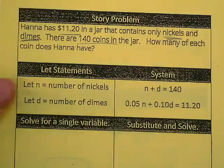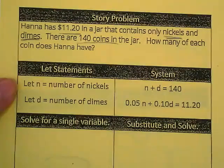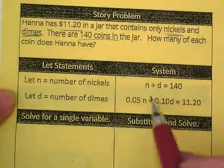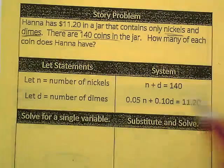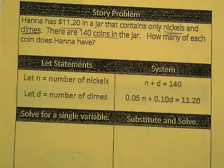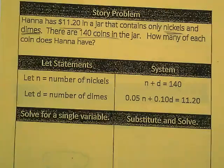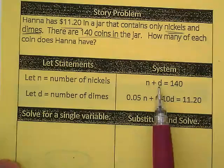How many of each coin does Hannah have? This has already been done for us today. We're going to let N equal what? And we're going to let D equal dimes. And then we're going to say that nickels plus dimes equals 140. Does that make sense in the context of the problem? How many coins total are in the jar? 140. And how many kinds of coins are in the jar? Are they both identified here?